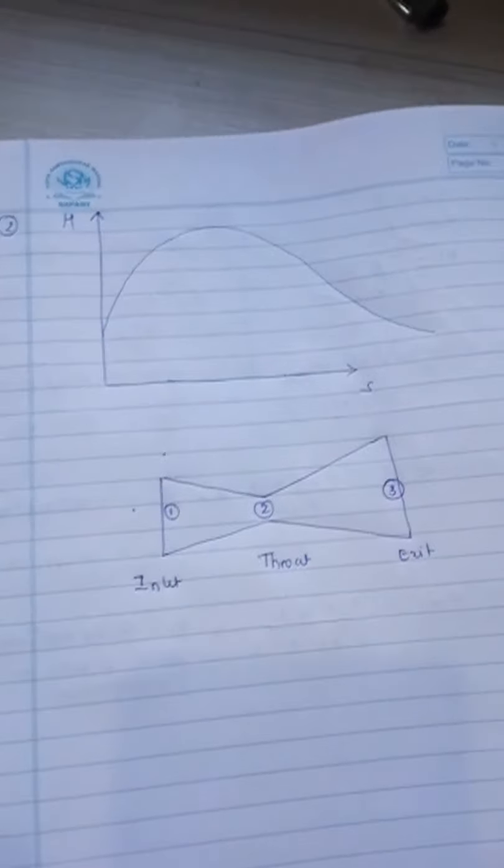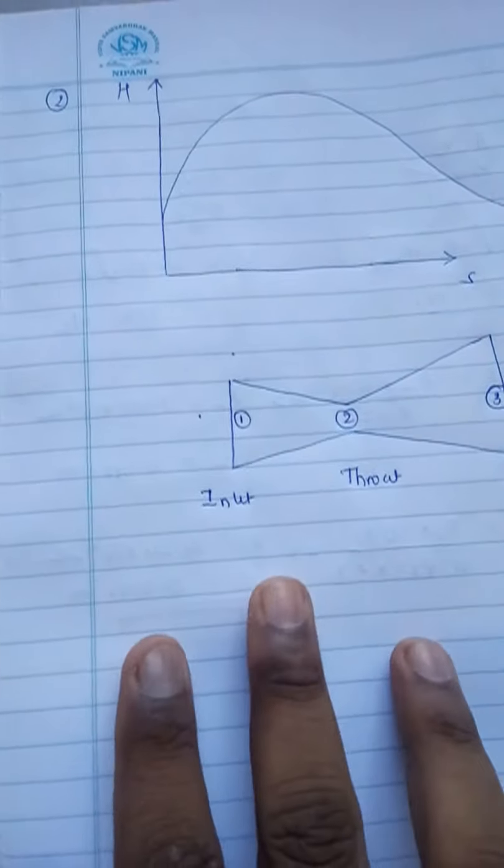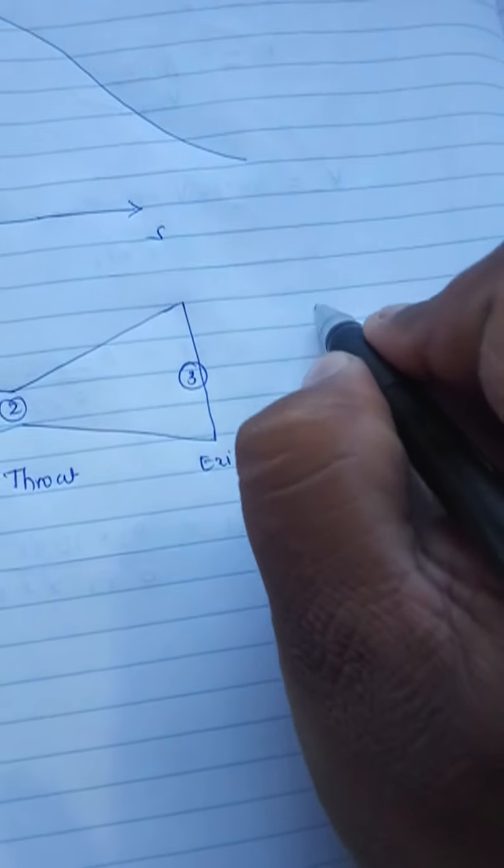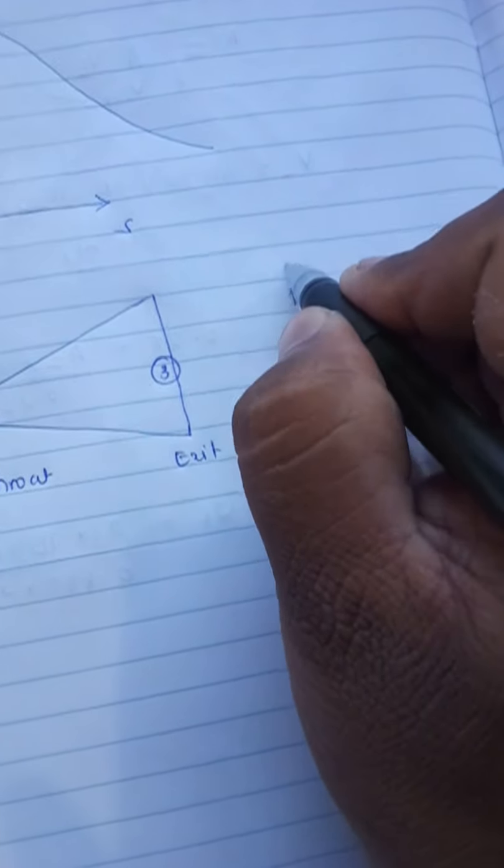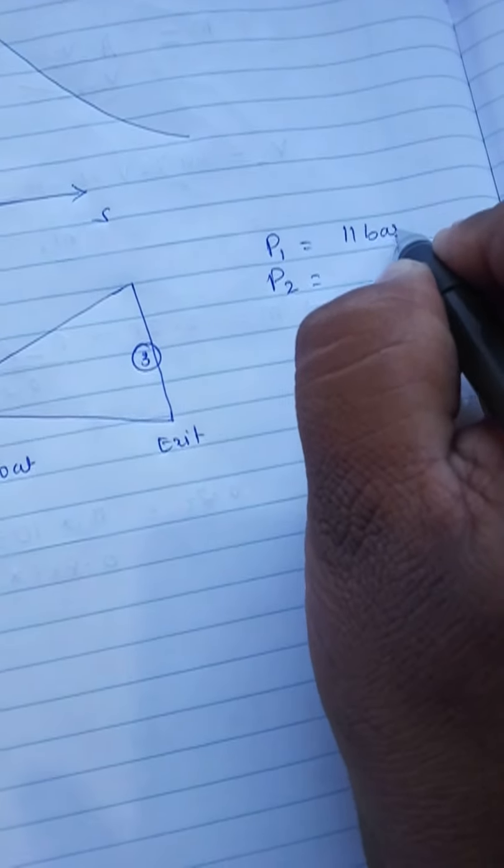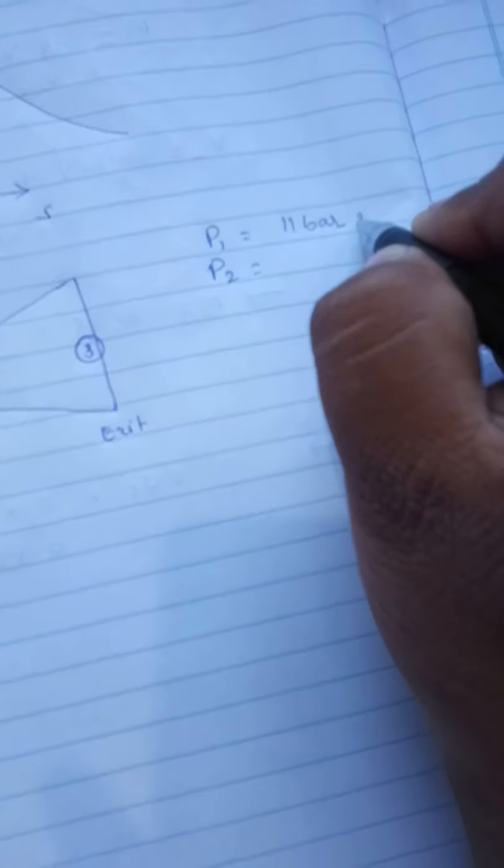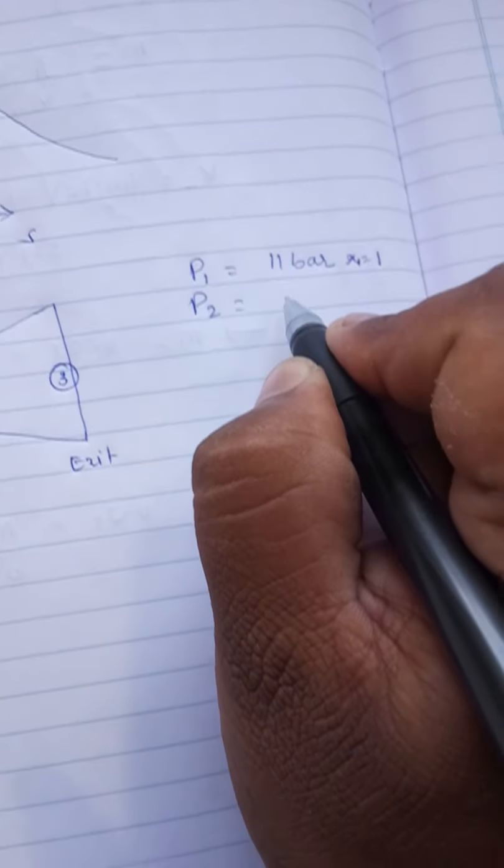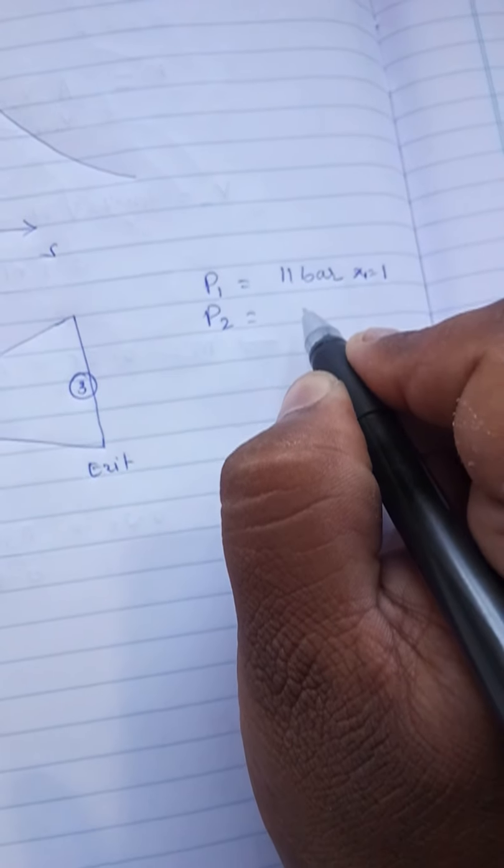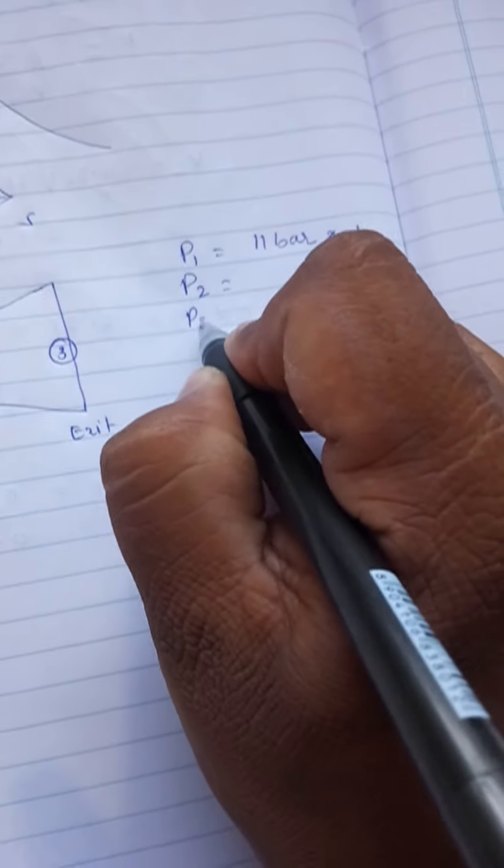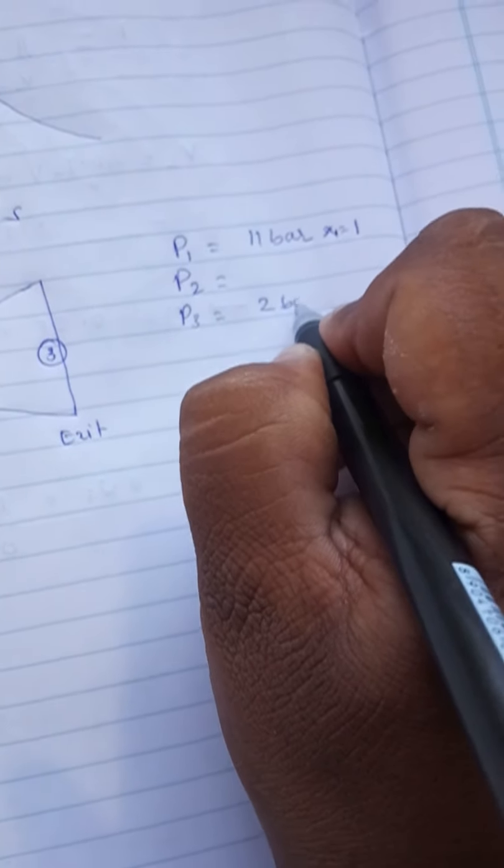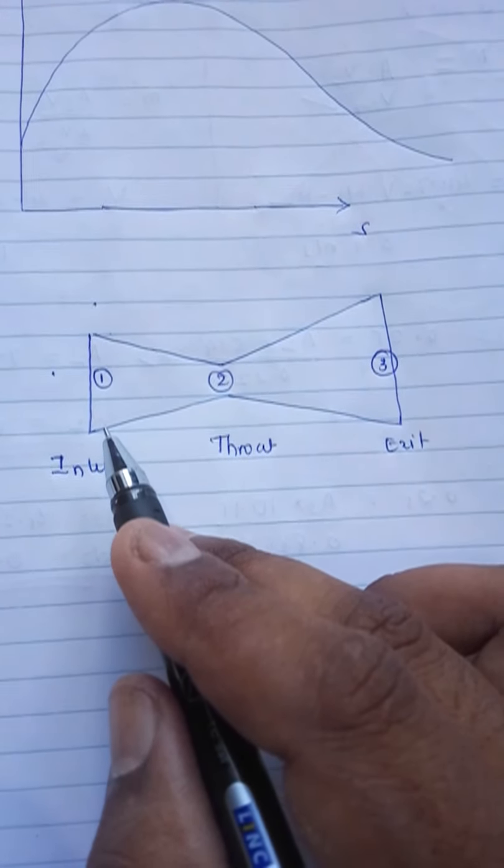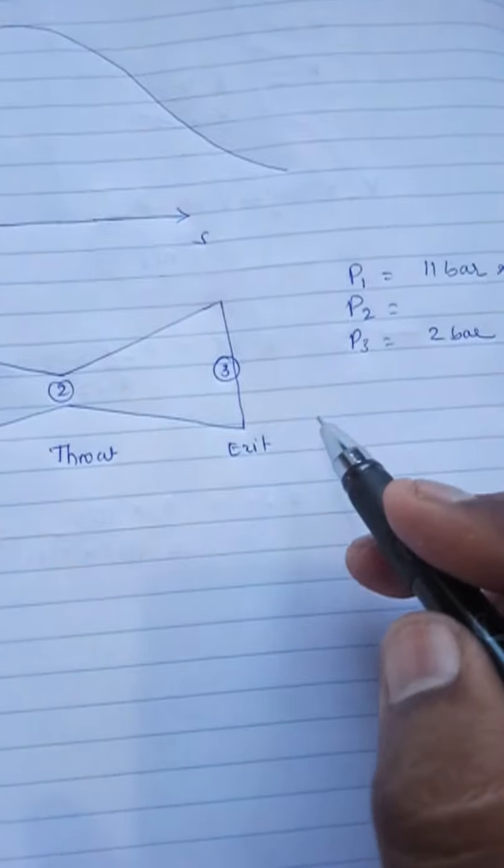Determine the exit velocity of the steam and second one ratio of cross section at exit and at throat. Assume the index adiabatic expansion is 1.135. So this one only we need to use here. Now just have plotted the HS diagram. Just see what all things he has given. He has given P1. P1 is equal to 11 bar. And dry steam he has mentioned means x is equal to 1. That is x1 is equal to 1. P2 pressure he has not given.